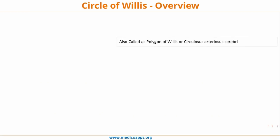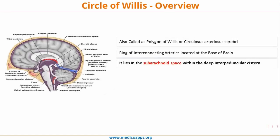The Circle of Willis is also called the Polygon of Willis or Circulus Arteriosus Cerebrii. Essentially, it is a ring of interconnecting arteries located at the base of the brain. More specifically, it lies in the subarachnoid space within the deep interpeduncular cistern.